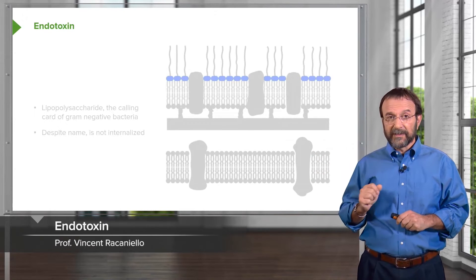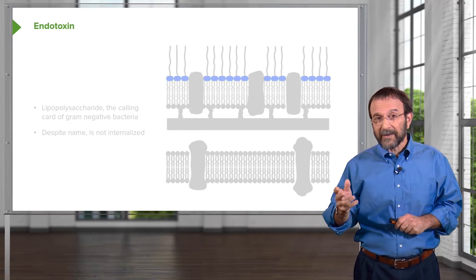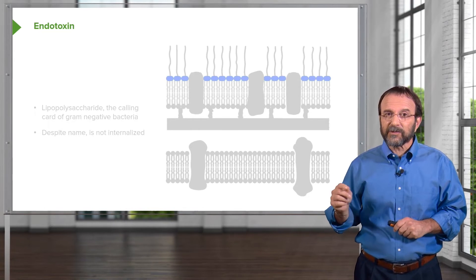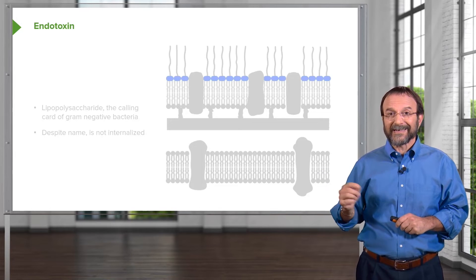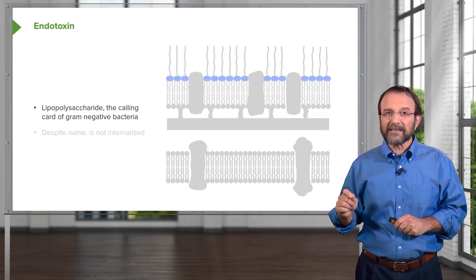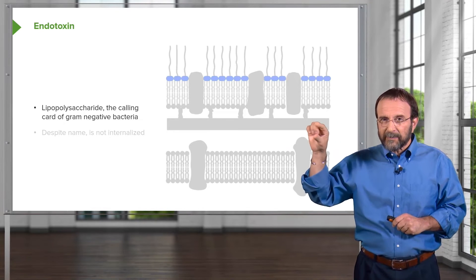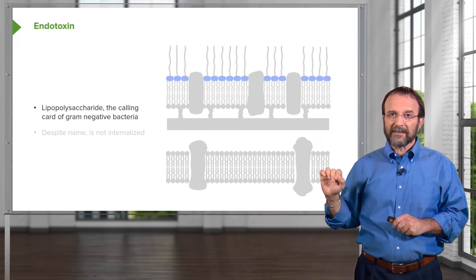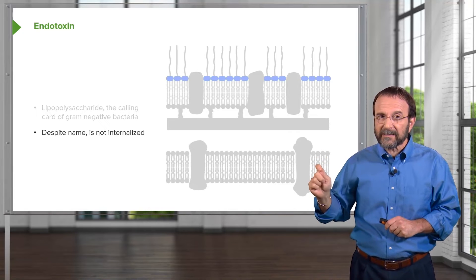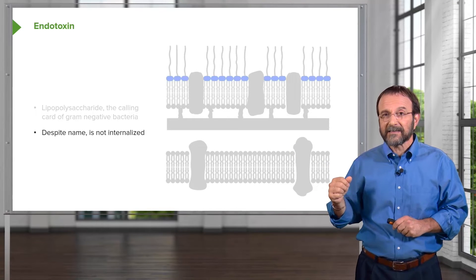Another important toxin produced by gram-negative bacteria is endotoxin. Endotoxin is sort of like the calling card of gram-negative bacteria — it announces to the host, 'I'm here, and you better watch out.' Endotoxin is nothing more than lipopolysaccharide, that outer layer on the outer membrane of a gram-negative bacterium. Despite the name endotoxin, this toxin is not internalized into the host cell — it remains extracellular. That is just the name that has stuck over the years.